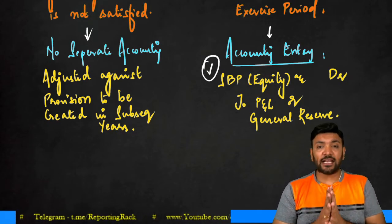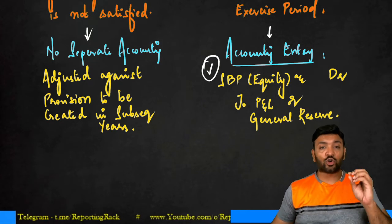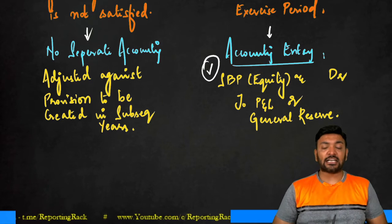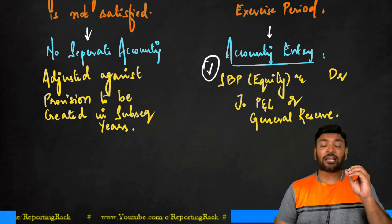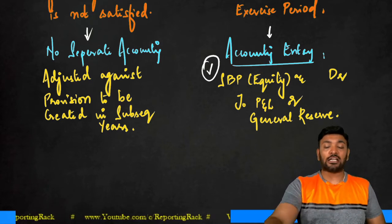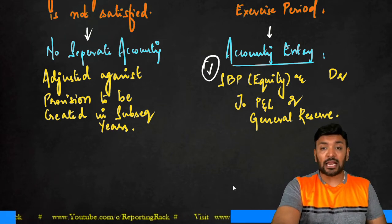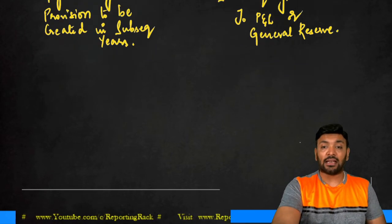We have seen already the basic structure of how IND AS 102 should be accounted for. Now I'll add one adjustment that is called as modifications to an option or a share-based payment. A share-based payment plan if it undergoes any modification, how does the accounting really occur?